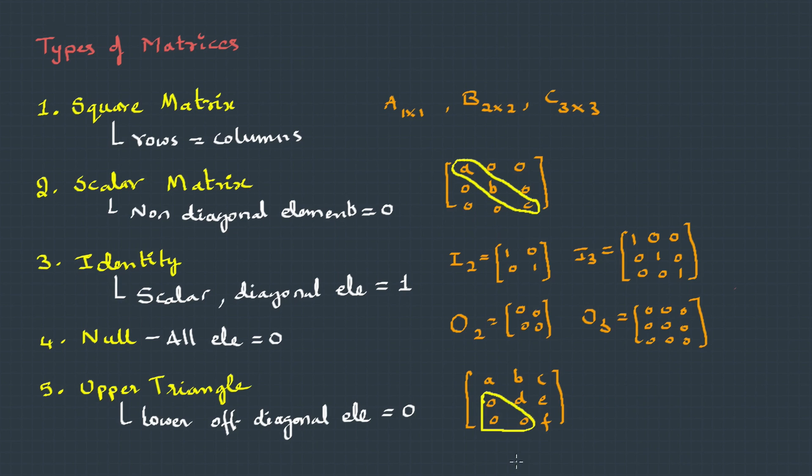On the same lines, if the upper off-diagonal elements are zeros, then it would be called a lower triangular matrix.